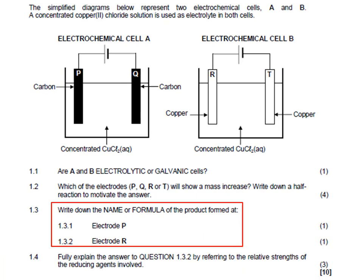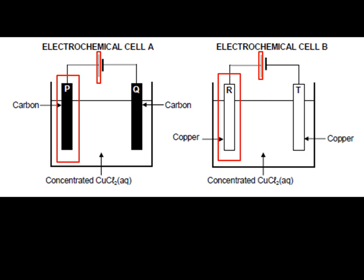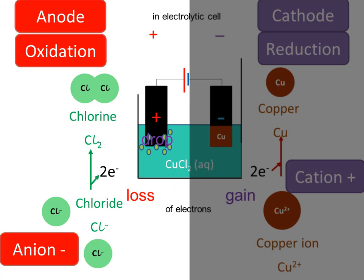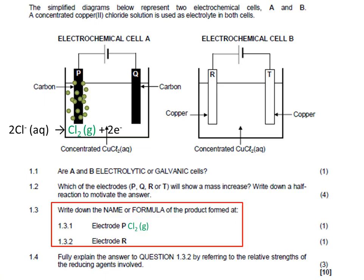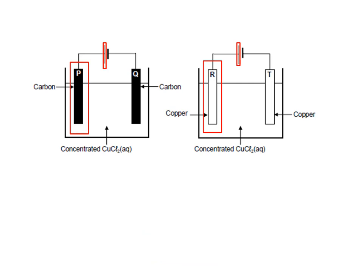Now we are asked the name and formula of the products formed at P and R. Notice that both of these are the positive electrodes, so they are the anodes because this is an electrolytic cell. The difference between P and R is that P is made of carbon and R is made of copper. We've been discussing the copper chloride electrolytic cell with carbon electrodes. We already know that chloride ions are oxidized at the positive anode, so the answer for P is chlorine gas, Cl2.